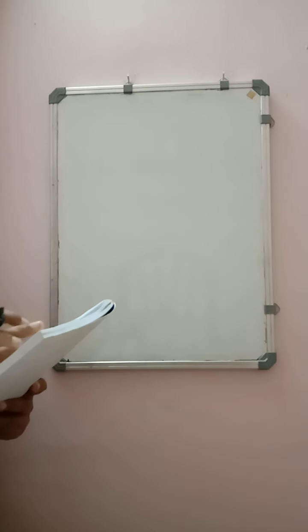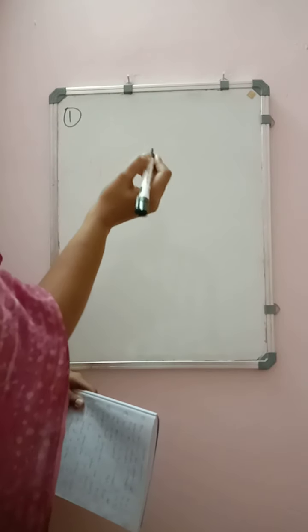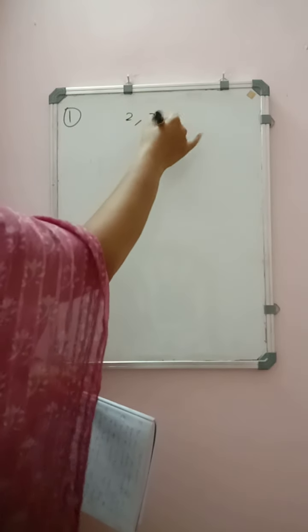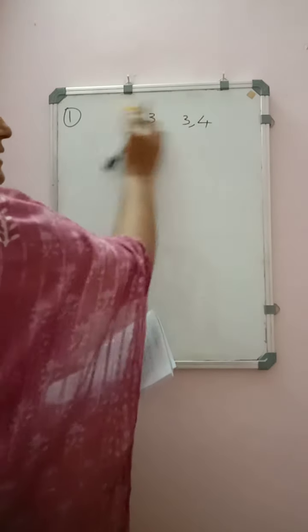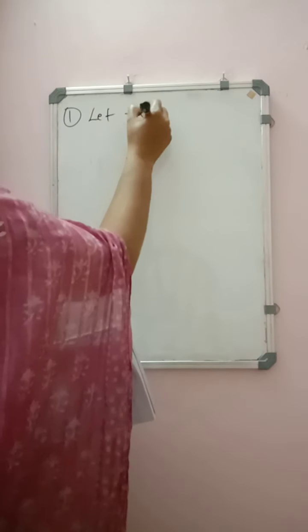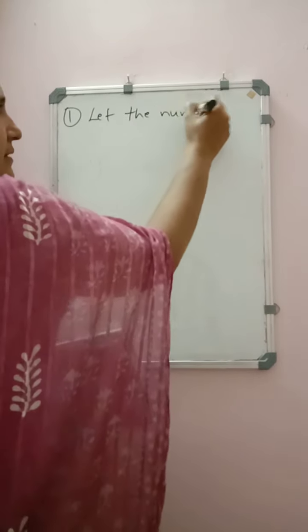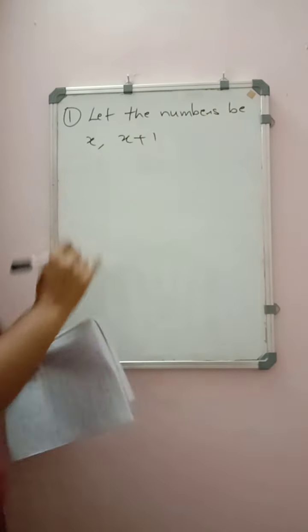Moving on to the first question. The first question is: the sum of the squares of two consecutive natural numbers. Consecutive natural numbers are natural numbers one after another, like 2 and 3, or 3 and 4. So we will take the numbers as x and x+1. Let the numbers be x and x+1.